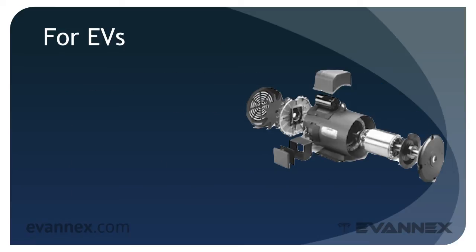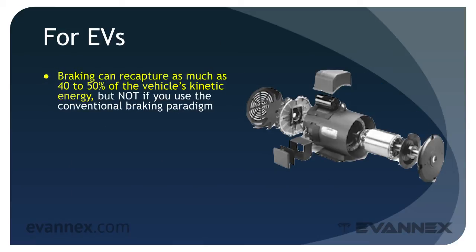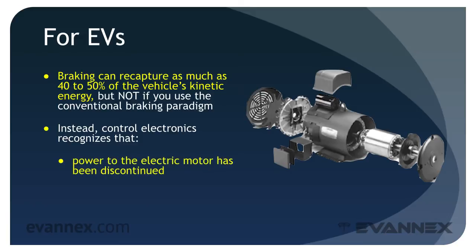For electric vehicles, braking can recapture as much as 40% to 50% of the vehicle's kinetic energy — but not if your disc brakes are used as the sole mechanism for slowing the car. Instead, control electronics recognize that the power to the electric motor has been discontinued — that is, you lifted your foot off the accelerator — and then initiate regenerative braking.